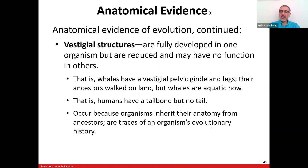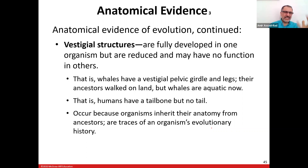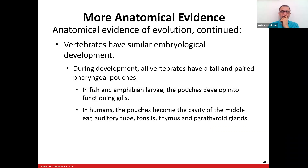Vestigial structures are structures that once had a function but no longer do. For example, the mammary glands in human males — females' mammary glands still function but males' do not, so male mammary glands are vestigial. Another example: house flies have two additional wings underneath their main wings that are vestigial. When they evolved, they originally had four sets of wings; now they only need two. There are many examples of vestigial structures in biology.